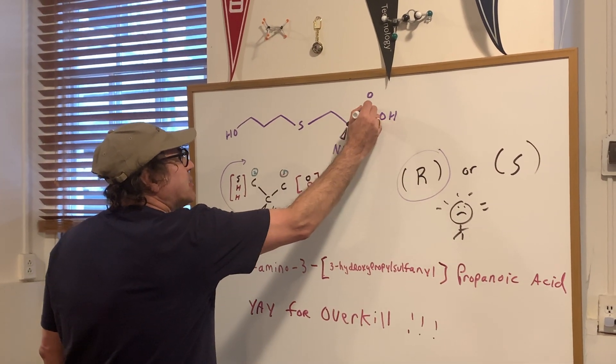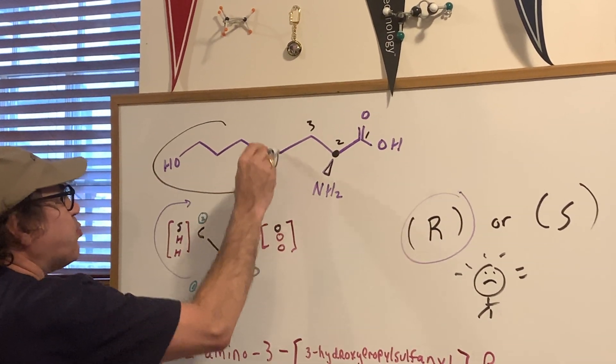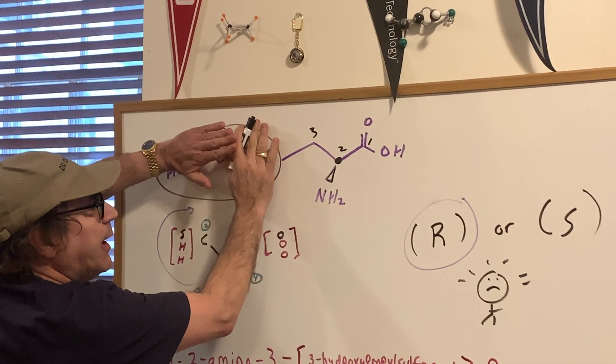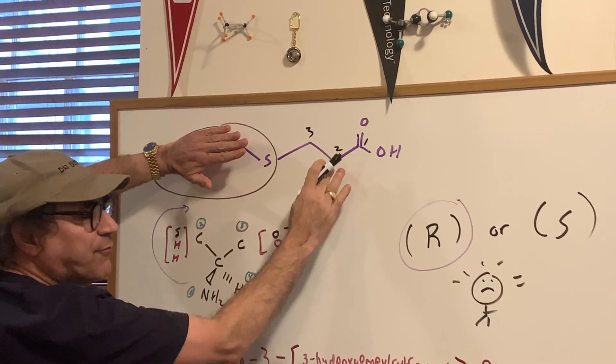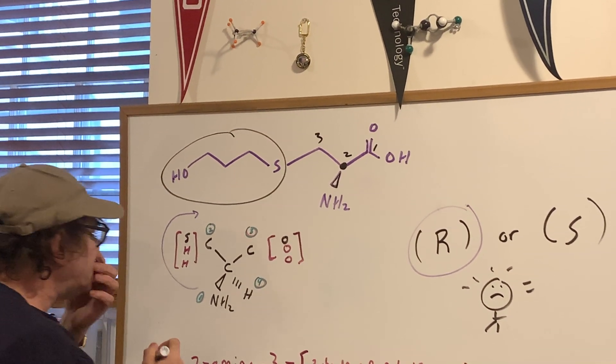The first thing I did is one, two, and three, and then just think of this as one big substituent. If this group wasn't here, it would be an R, and then you would have the 2-aminopropanoic acid. That would be easy, but as you can see,